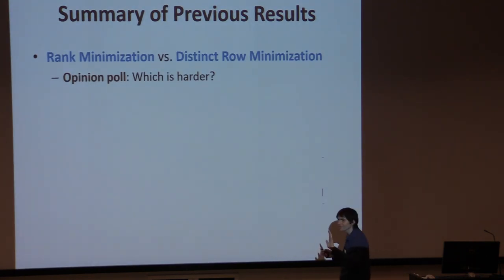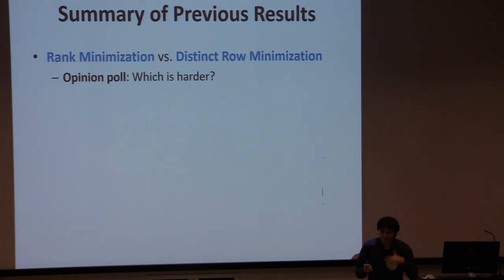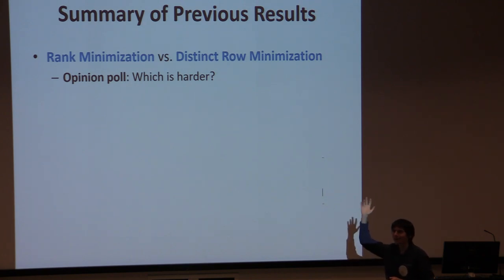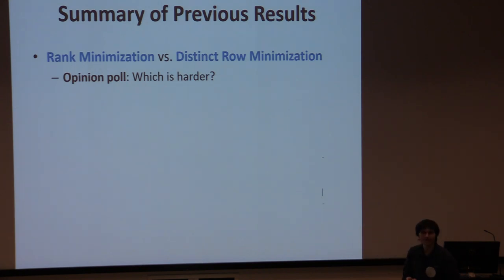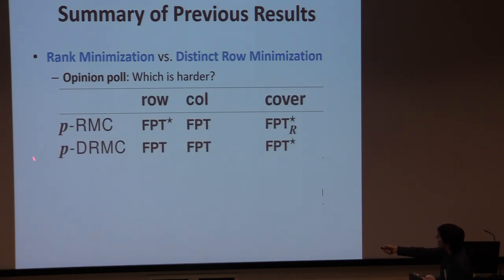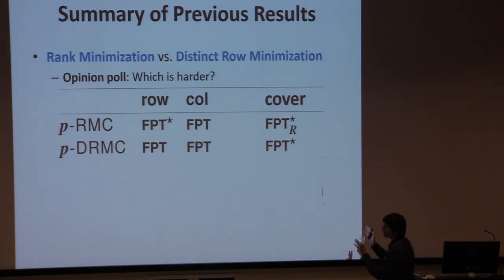I want to ask your intuition: what do you think is harder — filling in entries to minimize the rank, or filling in entries to minimize the number of distinct rows? Who thinks rank minimization is harder? We are all right — it depends on the parameter. In the bounded domain case, everything is FPT, which is good; here you have some randomized FPT. All of this is FPT.